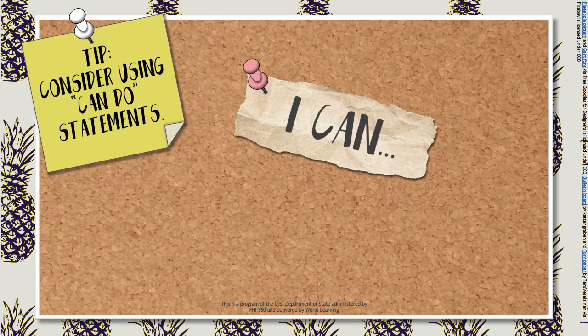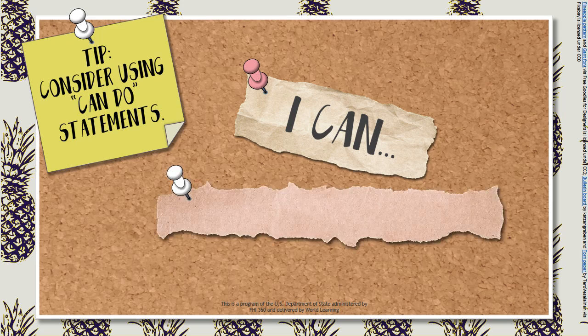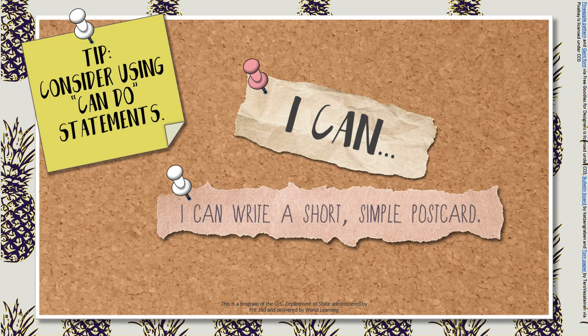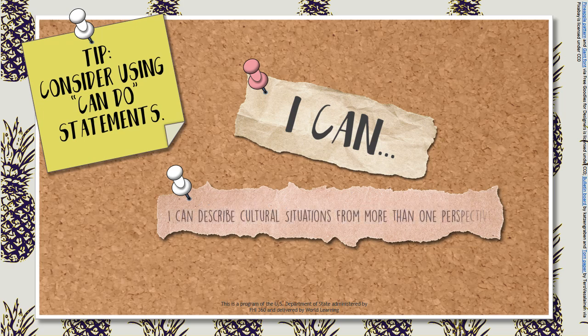Many educators find that the best wording for quality definitions are can-do statements. For example, I can write a short, simple postcard. Or, I can describe cultural situations from more than one perspective.